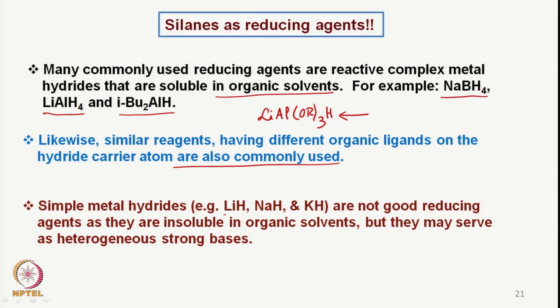Simple hydrides such as lithium hydride, sodium hydride, and potassium hydride are not good reducing agents as they are not soluble in organic solvents. They react violently with protic solvents and obviously do not dissolve in ether or tetrahydrofuran. Because they are ionic and hard anions, they behave as strong bases — used to remove an acidic proton to generate an anion. So we have to see other possibilities for developing reducing agents, and in that respect, silanes behave as good reducing agents.